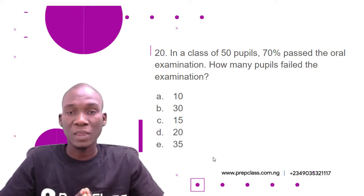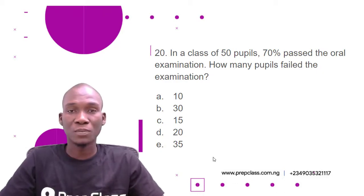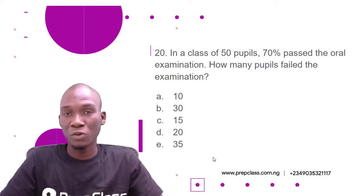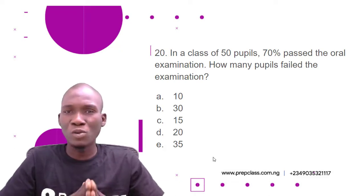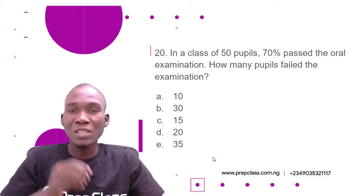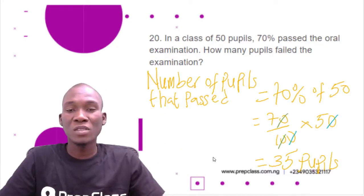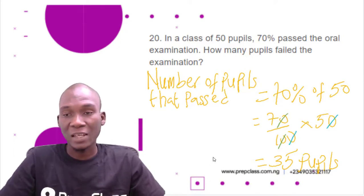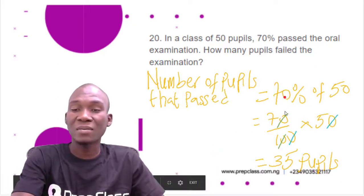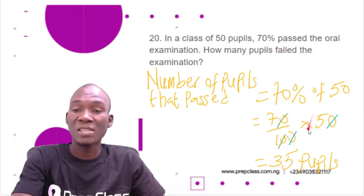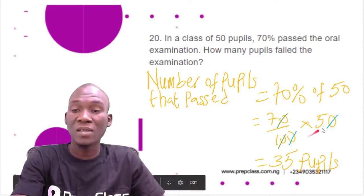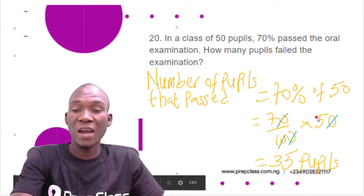Since 70% passed, it means 30% must have failed, because percentages total 100%. To find how many pupils passed: number of pupils that passed equals 70% of 50, which is 70/100 times 50. The zeros cancel and we get 7 times 5, which equals 35. So 35 pupils passed the examination.